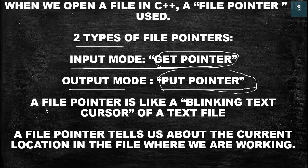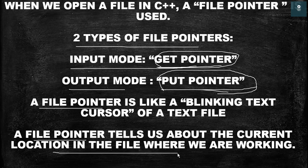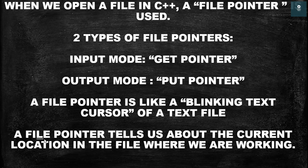A file pointer is like a blinking text cursor of a text file. We know that in a text file we have a cursor, and in the same way a file pointer is like a cursor. A file pointer tells us about the current location in the file where we are working — it tells us the current location where we are working in the file.